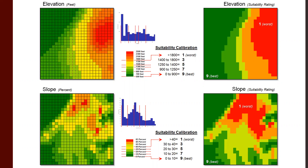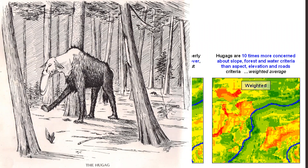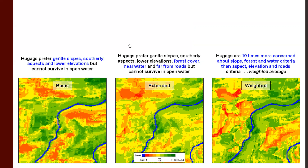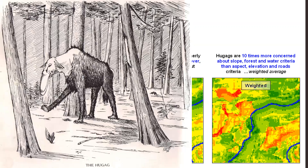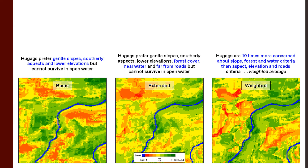Just like a species might survive in a place that has something bad — bad elevation, bad slope, bad whatever — if everything else is good, maybe it wasn't a deal breaker. Like for our Hougag here, the menace of the Minnesota Northwoods: the Hougag prefers gentle slopes, southerly aspects, and low elevations because, of course, those long legs love to soak up the sun. Not going to be able to do any kind of steep work, can't do the water. If we combine all these different pieces together, we might get a model that looks like the one on the left, with some bad areas and some good areas.